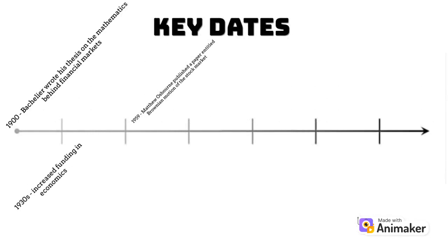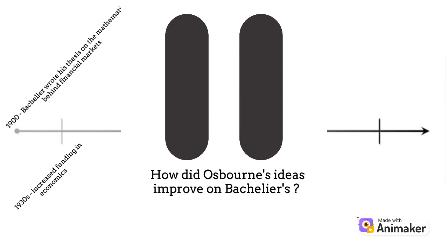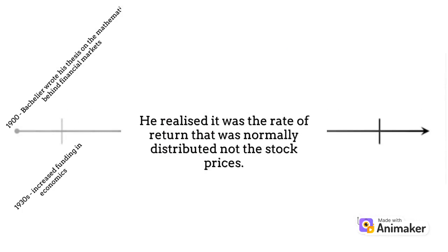How did Osborne's ideas improve on Bachelier's? He realized it was the rate of return that was normally distributed, not the stock prices.